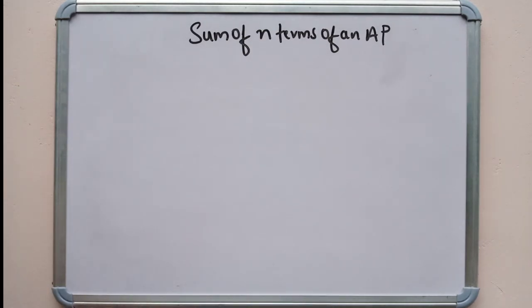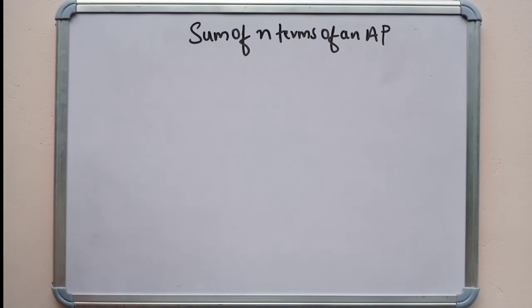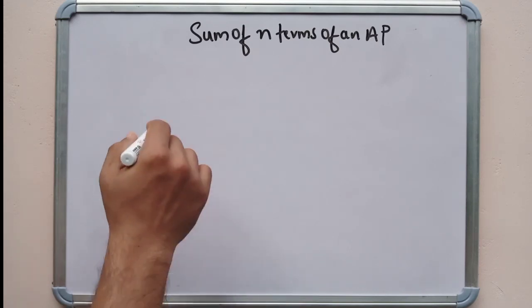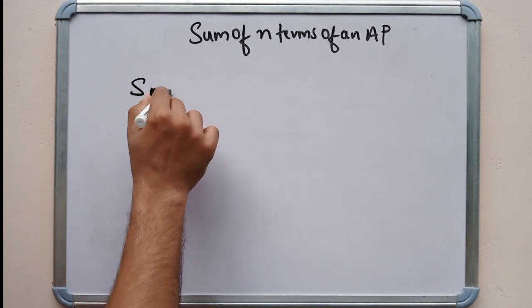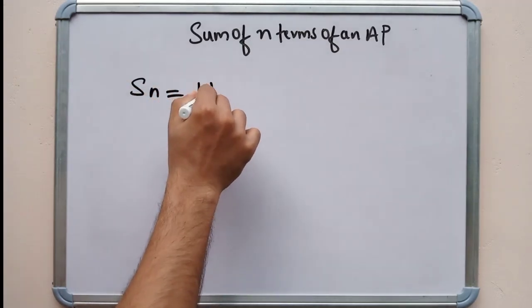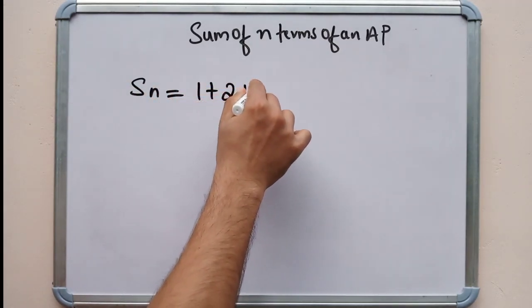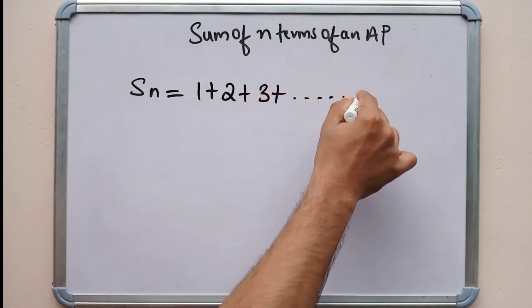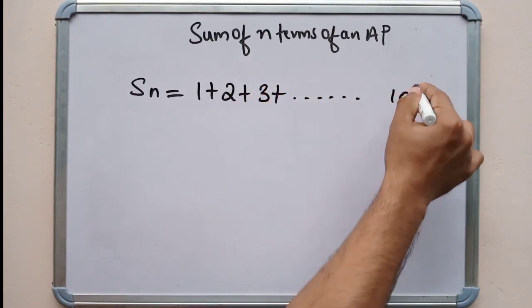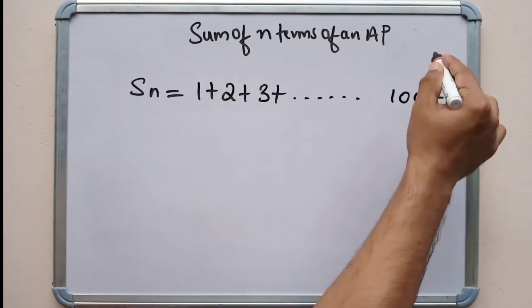Suppose we have 100 variables in total. Sn is equal to 1 plus 2 plus 3 plus dots up to 100. This is the first term.